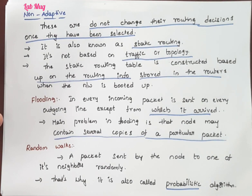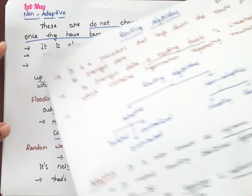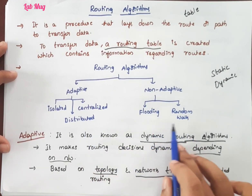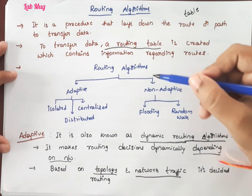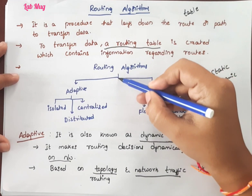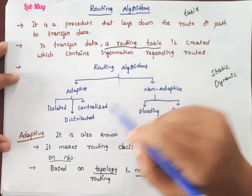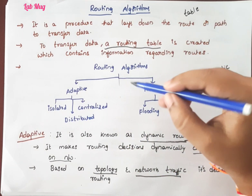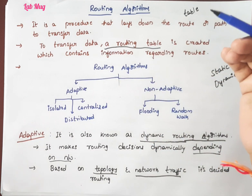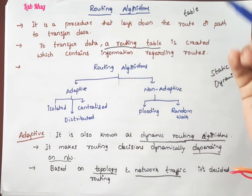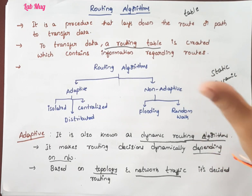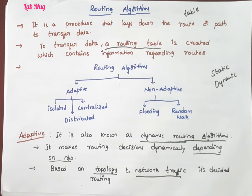To summarize, the routing algorithm categories are: centralized, isolated, distributed under adaptive, and non-adaptive which includes flooding and random walk. In general, we also call the hybrid combination — using both distance-based algorithm and link-based algorithm together. That hybrid part uses one portion of each algorithm. This is a very important topic from an exam point of view. The next class will cover the distance-based algorithm. Thank you.